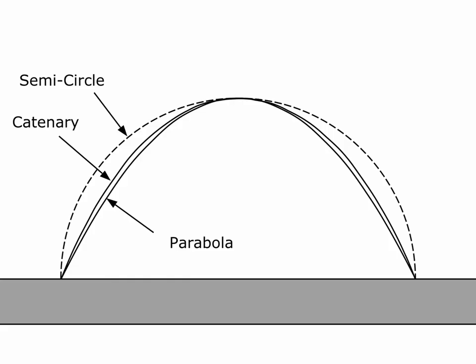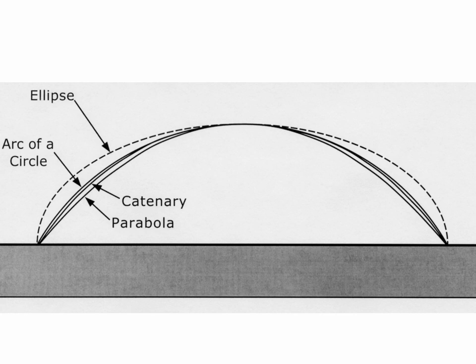This image shows a high parabolic arch of about the proportions of the Broadgate Exchange House — that inner curve here — which we are also drawing in the context of a catenary and a semicircle, just for reference. This image shows a shallower parabolic arch, also with a catenary, and in this case an arc of a circle and an ellipse for reference.